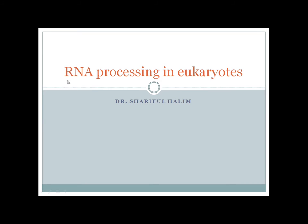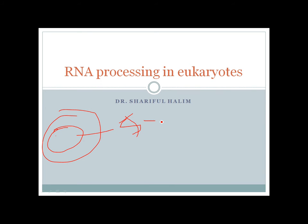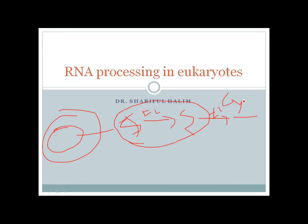Today I'm going to talk about RNA processing in eukaryotes. RNA is ribonucleic acid and it is formed in the nucleus after transcription from DNA. In a eukaryotic cell, the DNA in the nucleus is transcribed to mRNA, which ultimately will form proteins — transcription occurs in the nucleus and translation occurs in the cytoplasm with the help of tRNA.